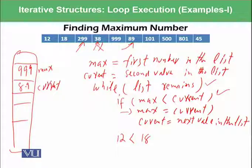And then you can see until the list ends, every time this if statement remains false. However, this statement keeps on running because this statement is not part of the if statement. 101 is coming in the current. As max is greater than 101, there is no change. Then current is moving to 500. There is no change. Then current is moving to 801. Still max is 999. No change. Then current is moving to 45 and comparing with 999. Again 999 is maximum. No change. And then your while loop terminates because list doesn't remain anymore.